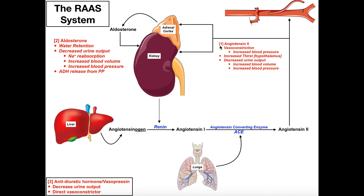There's another effect of angiotensin 2. It will act on a gland that sits on top of each kidney called the adrenal gland, or suprarenal gland. Specifically, one region called the adrenal cortex has a sub-region called the zona glomerulosa, and angiotensin 2 acts on that region and causes it to release another hormone called aldosterone. Aldosterone, from endocrinology, is a mineralocorticoid and also a steroid hormone.